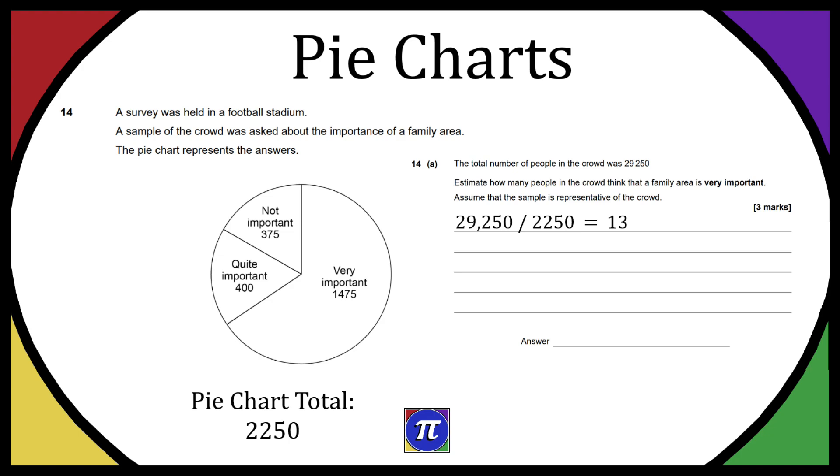Now we know how many times bigger each section should be, we can just apply the 13 to each section we want the answer for. Very important had 1,475 people in our sample. If we're going to apply it to the larger data set of 29,250, we're going to have to times it by 13. So 13 times 1,475 equals 19,175. That's going to be our final answer.